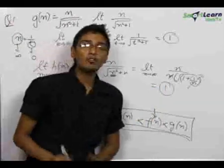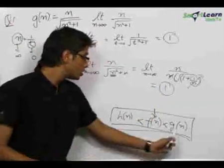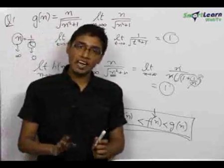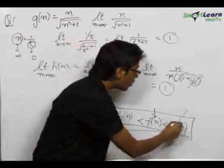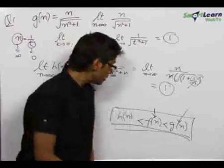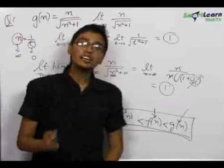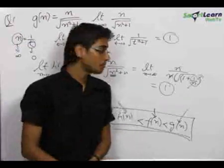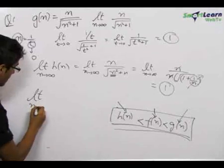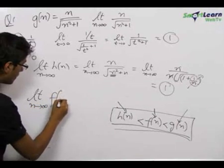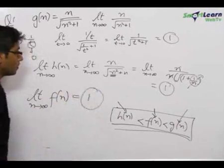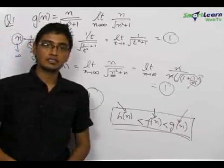We have found two functions g(n) and h(n) between which f(n) is sandwiched, and the limit of g(n) at n tending to infinity equals the limit of h(n) at n tending to infinity, both equal to 1. So by the sandwich theorem, the limit of f(n) as n tends to infinity is also equal to 1, which is our final answer.